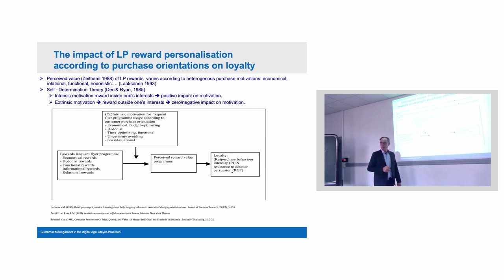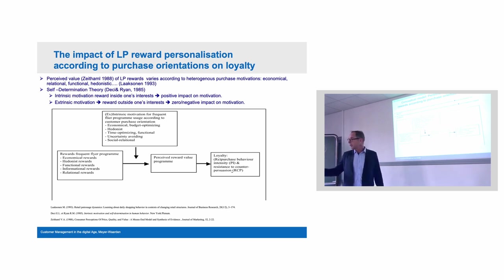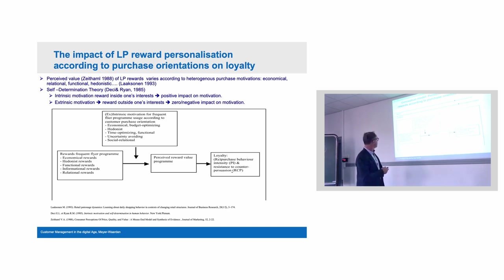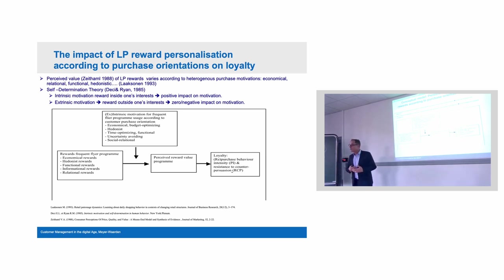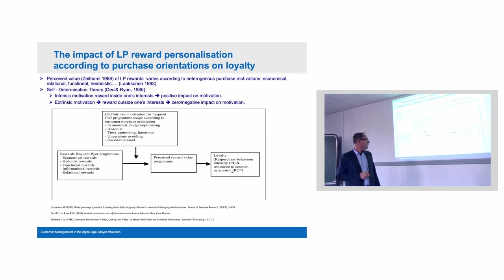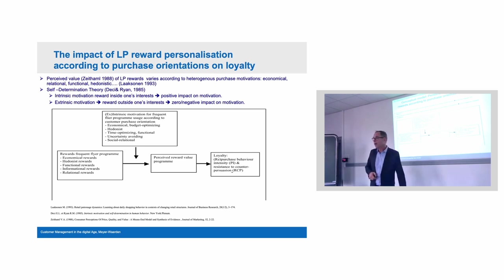According to this differentiation, the perceived reward value of the program will differ. If you offer money discounts to economically budget-optimizing customers, their perceived value will increase. If you offer time-optimizing customers functional rewards — priority check-in, priority check-out counters, or home deliveries — these are rewards that would increase value perception. The output would then be increased loyalty: an increase in repurchase behavior, but also attitudinal loyalty, meaning higher resistance against counter-persuasion by competitors.